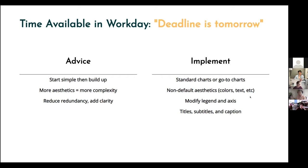Then you want to go with non-default aesthetics, because that makes it more visually interesting. Don't use the default colors, don't use the default text size or text colors. You're going to want to modify your legend and axes, and then really hit the titles, subtitle, and caption — subtitle and caption being optional — because the title area is where your message is, where you convey the point you're trying to get across. The subtitle and caption are for additional caveats and information.